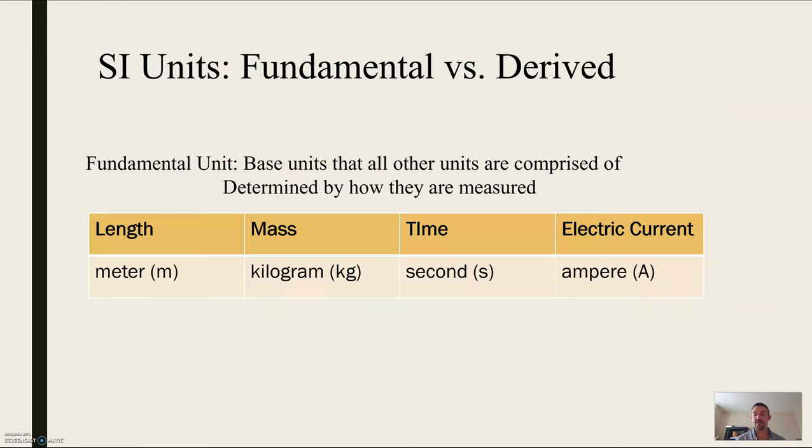So units that we're going to be dealing with in physics, we're primarily going to be working in SI units or the international standard of units. And so those are comprised of four fundamental base units, which are dealing with length, mass, time, and electric current. And so length has units of meters, mass has units of kilograms, time has units of seconds, and electric current, which we're not going to be dealing with in this course as units of amperes or amps for short.